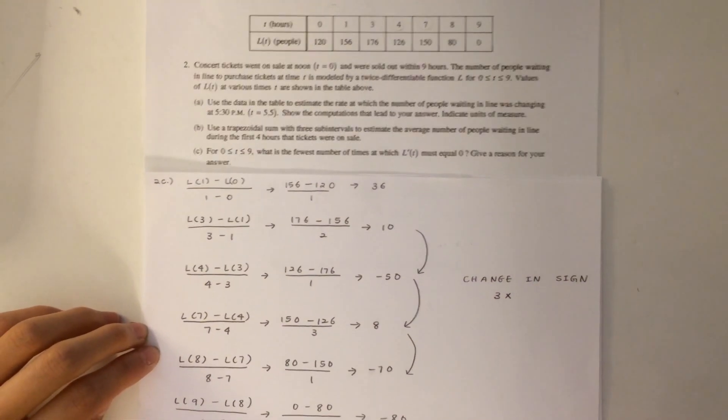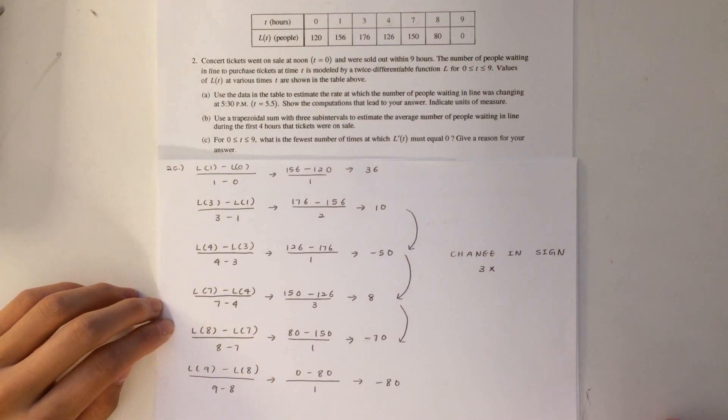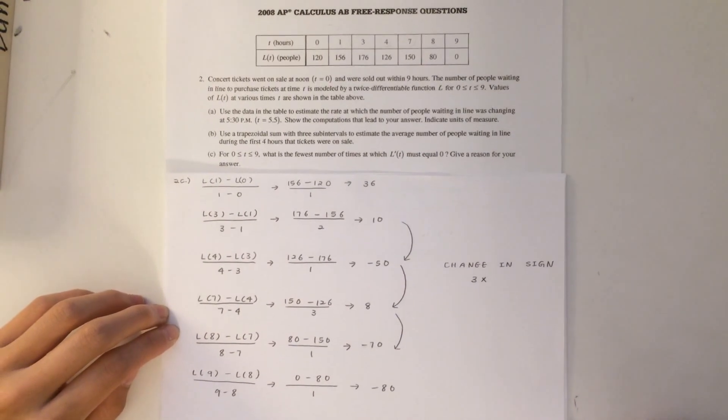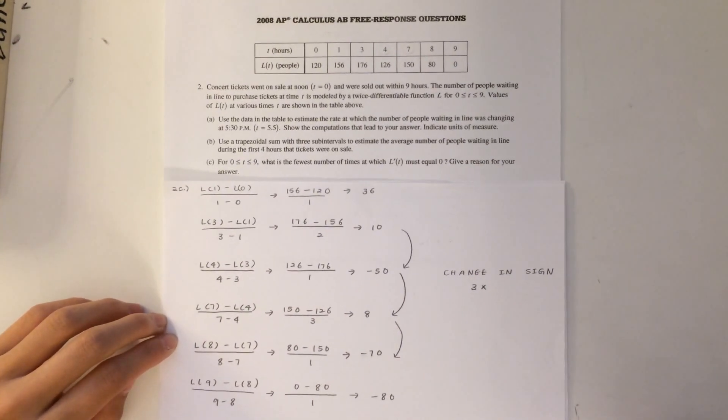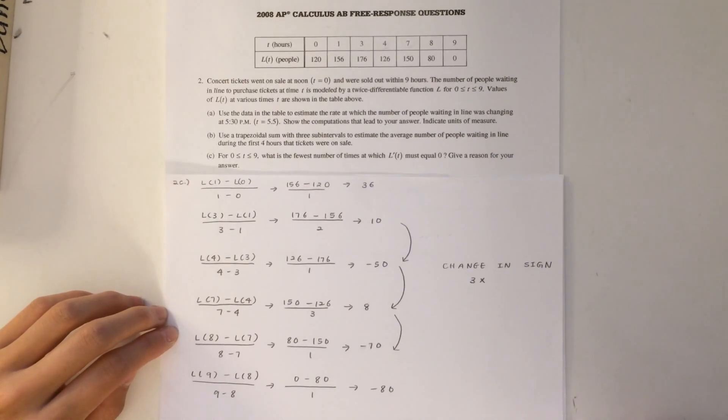Since the question told us earlier that the function is twice differentiable, the mean value theorem and the intermediate value theorem apply. We are looking for when l prime of t will be 0, which will occur any time when l prime of t changes signs.